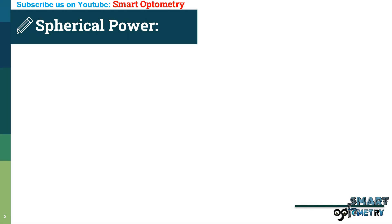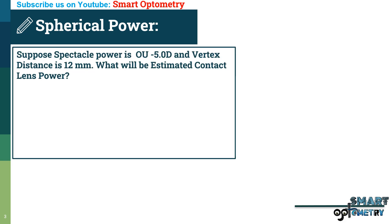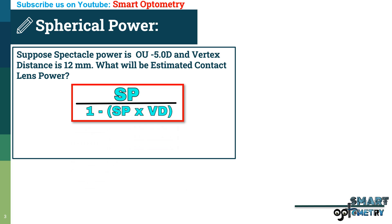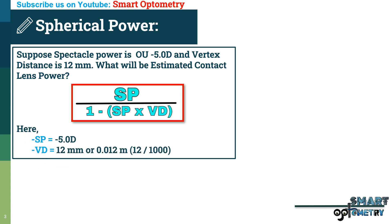Now let's see how to convert spherical spectacle power into contact lens power. Suppose spectacle power is -5D and vertex distance is 12mm. What will be the estimated contact lens power?